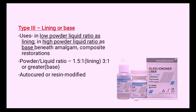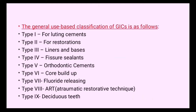Type 3 glass ionomer cement is used as a lining or base. It acts as a base beneath amalgam or composite restorations. The powder-liquid ratio is 1.5:1 for lining and 3:1 or greater for base applications. It is auto-cured or resin modified.